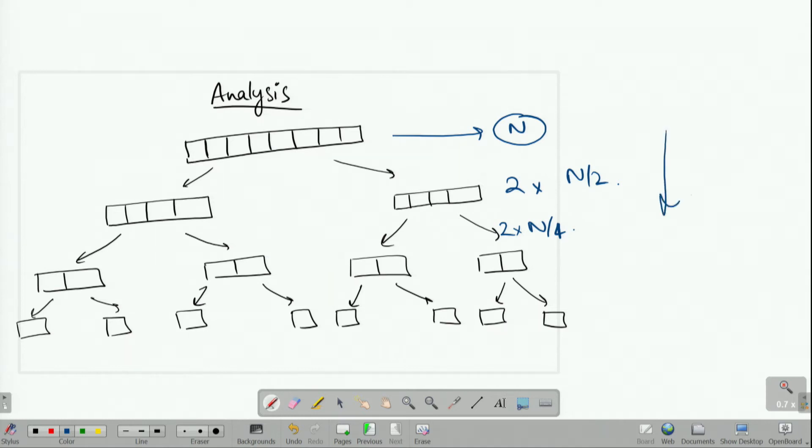Similarly, while we move down, even though the number of elements in each subarray is decreasing, the number of arrays themselves is also increasing. Therefore, at each level there is at least n elements in total.